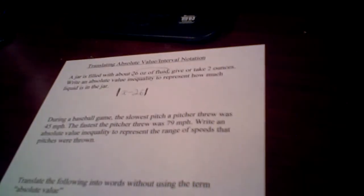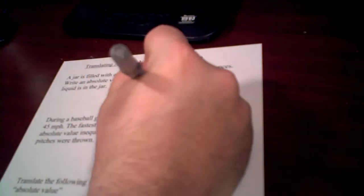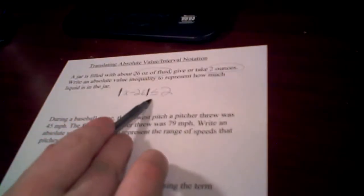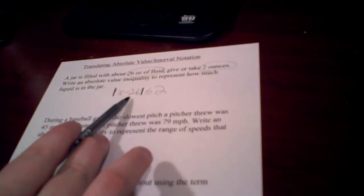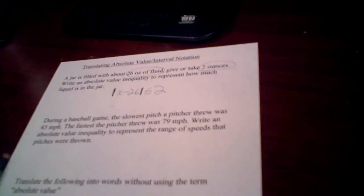It's within, give or take. They might talk about tolerance. It's about, is less than or equal to, here's the tolerance, it's within 2 ounces. So that translates into the absolute value of x minus 26 is less than or equal to 2.